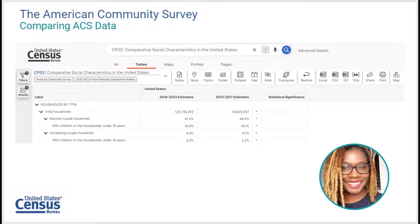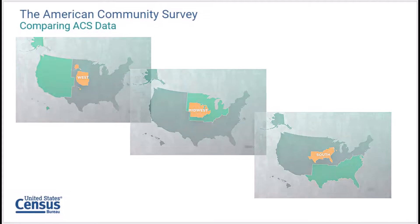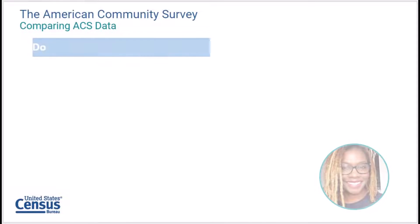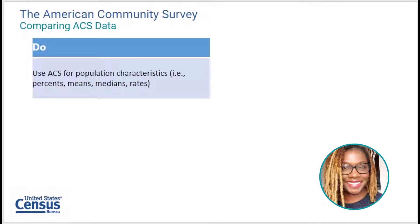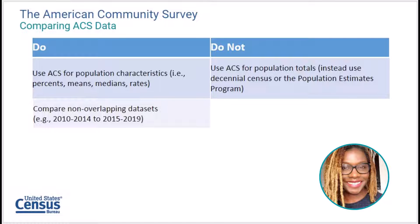One of the main benefits of the ACS is the ability to make comparisons over time, across different geographic areas, and across different population subgroups. The Census Bureau recommends that users compare population statistics for percents, means, medians, and rates rather than estimates of population totals. If you're looking for population totals, we recommend using the Decennial Census or Population Estimates program. In general, the Census Bureau recommends that you do compare estimates from non-overlapping periods — for example, compare a 2010 to 2014 ACS five-year estimate to a 2015 to 2019 ACS five-year estimate.